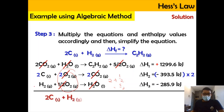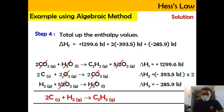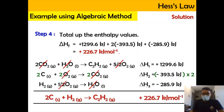After cancellation, what remains is 2C + H₂ on the left and C₂H₂ on the right. Step 4: total up the enthalpy values. ΔHf = ΔH₁ + ΔH₂ + ΔH₃ = +1299.6 + 2×(−393.5) + (−285.9) = +226.7 kJ mol⁻¹. Don't forget to include per mole at the end, because it refers to the formation of one mole of C₂H₂.